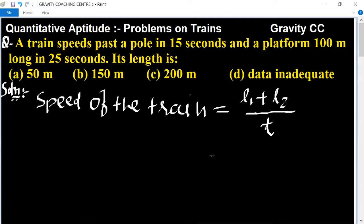Length of the train is not given, so we put L1. Length of the platform is 100 meters and time is 25 seconds.